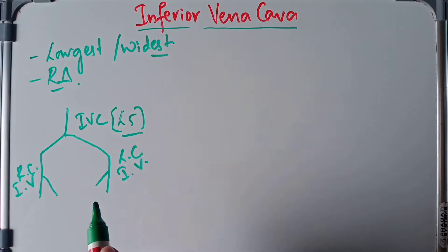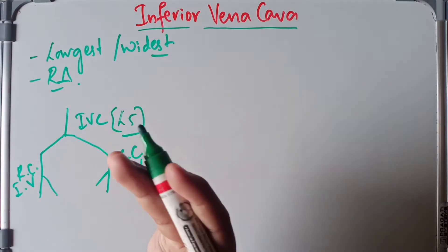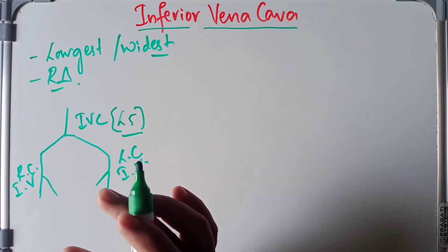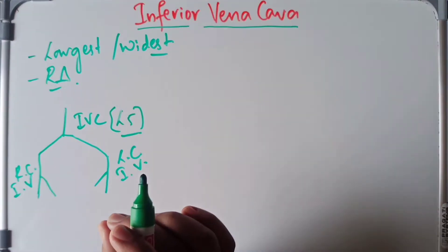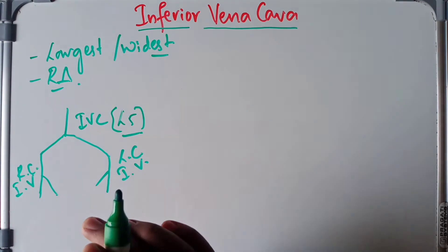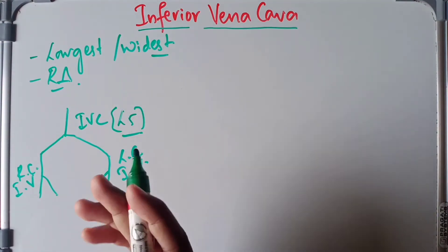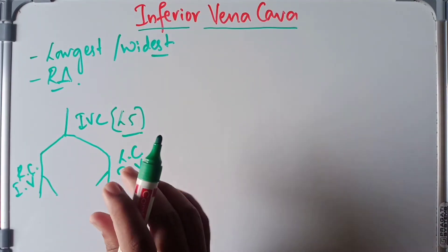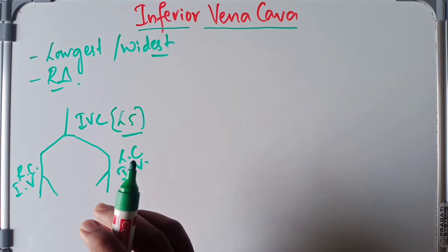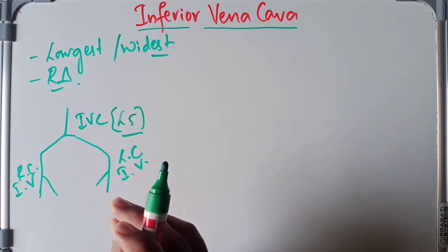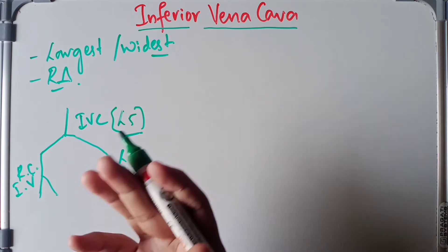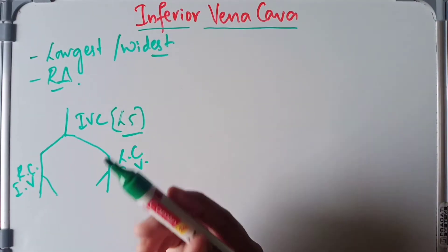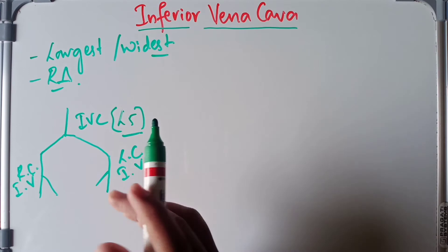Regarding the relations of the inferior vena cava, anteriorly we have the root of the mesentery, the right testicular or ovarian artery, the third part of the duodenum, the head of the pancreas, the bile duct, and also the portal vein on the anterior side.